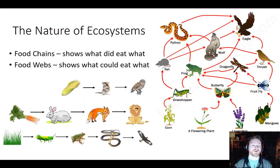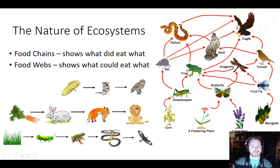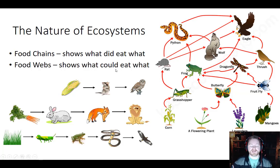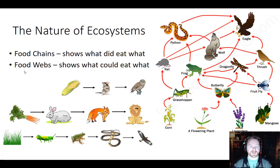Food chains show what did eat what. What did this mouse eat? He ate the corn. What did the owl eat? He ate the mouse. What did the lion eat? He ate the fox. What did the frog eat? He ate the grasshopper. This is saying what did eat what — and that's the big difference between a food chain and a food web.